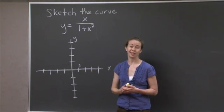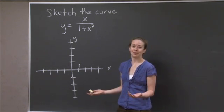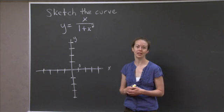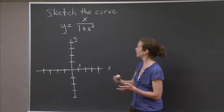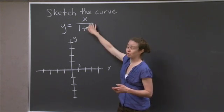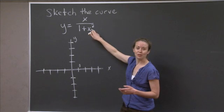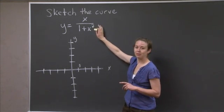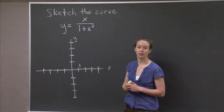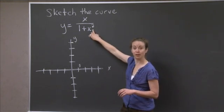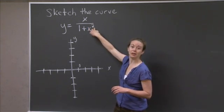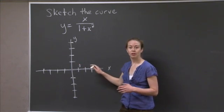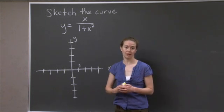Some other things we think about before we even start taking derivatives are anything I can find out about this function, like end behavior — what happens as x goes to positive infinity and as x goes to negative infinity. Because this is a rational function, the higher power is going to win out. The higher power here is in the denominator, so as x goes to positive infinity, this whole expression is going to head to 0. So when x goes to plus or minus infinity, our function is headed to 0, meaning it has a horizontal asymptote.